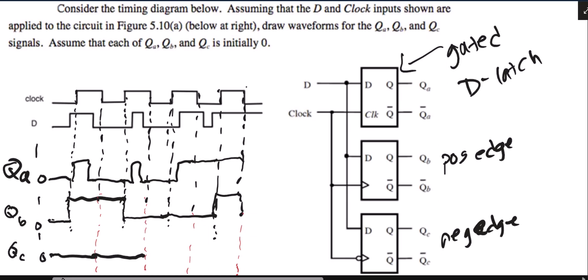D is 0, so it will stay 0. And then at this negative edge, D is 1, so it becomes 1, and it stays that way there. And at this last negative edge, D is still 1, so it will stay 1.